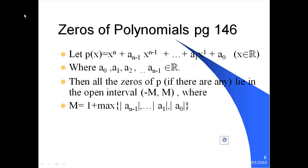The Localization of Zeros theorem: if p of x is a polynomial where the leading coefficient is one and the coefficients are a-zero, a-one, a-two, all the way to a sub (n minus one), for the coefficients of x, x squared, all the way to x to the power n minus one, then all the zeros of p, if any, lie in the open interval from minus M to M, where M is one plus the maximum of the absolute values of the coefficients.